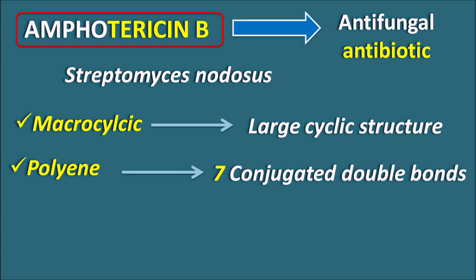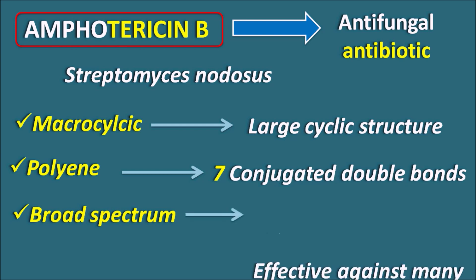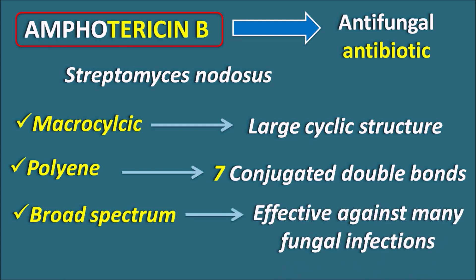The third important feature is that Amphotericin B is a broad spectrum antifungal antibiotic, meaning this drug is effective against various types of fungal infections. However, one limitation is that Amphotericin B is not orally available because of its poor absorption. It is mainly given by the intravenous route to treat systemic fungal infections.